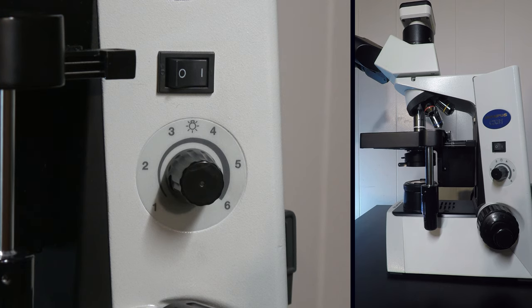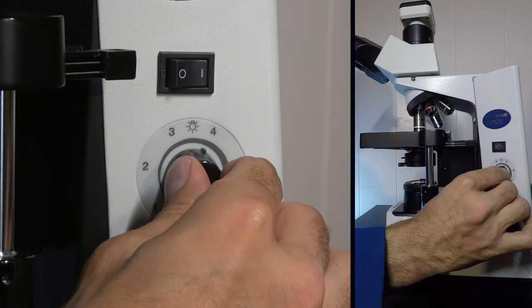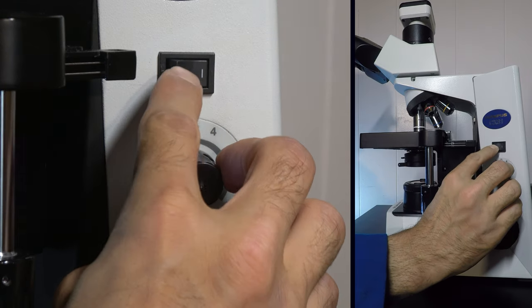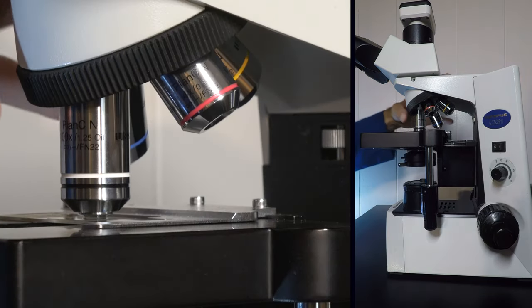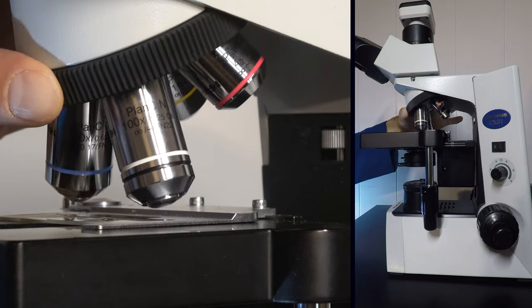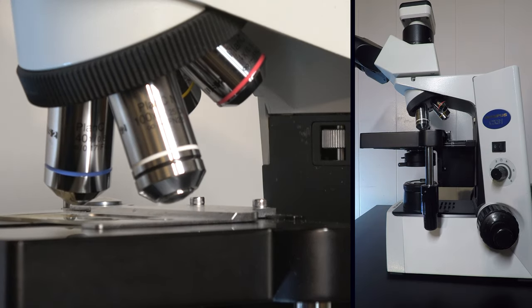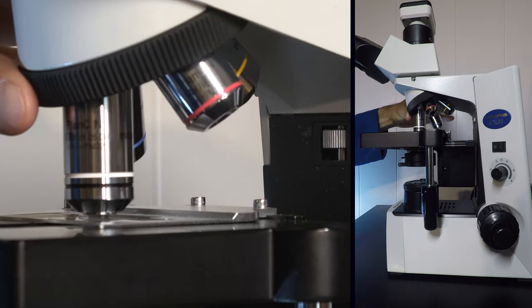Proper shutdown of your microscope is critical to learn. Begin by turning down the light intensity and shutting off the light switch. Normally, we would turn the turret back through the objectives to the 4x, but this time we don't want to drag the 40x through the oil.